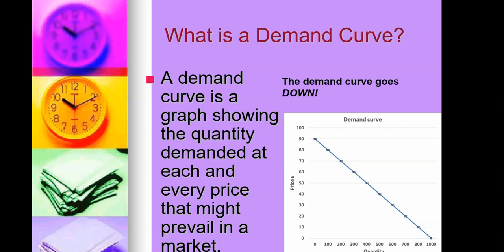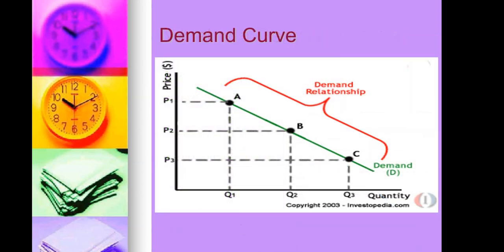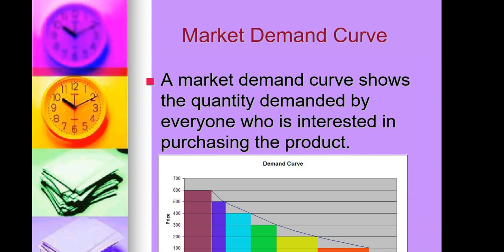By the way, the demand curve does not necessarily look straight like this one here — it tends to move around. It can actually move to the right and to the left depending on different scenarios of demand. You can see how there is a relationship between the quantity sold and the price of the item.